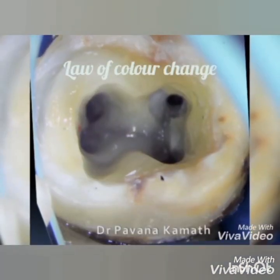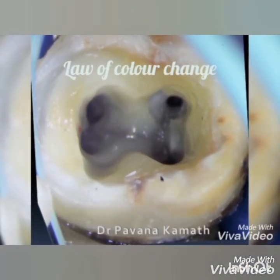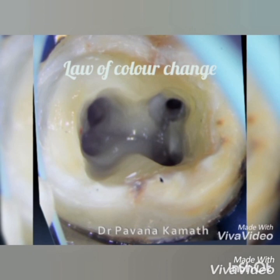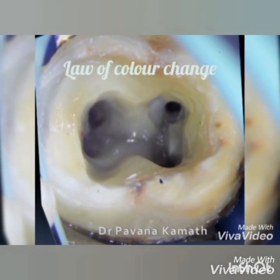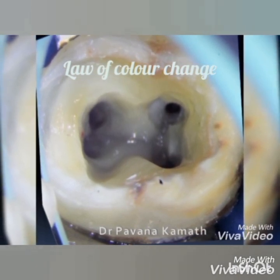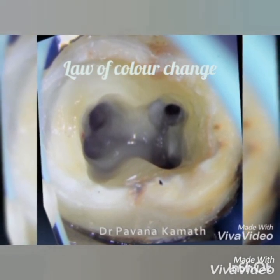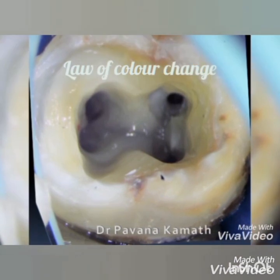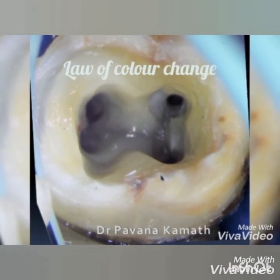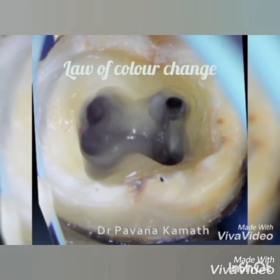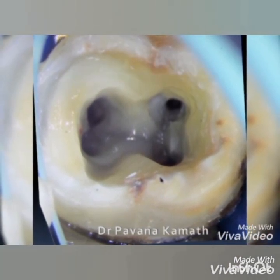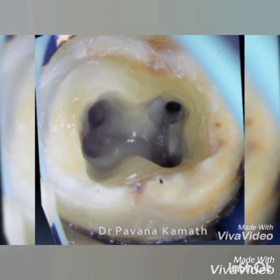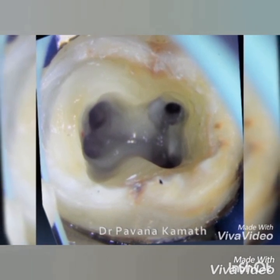The next law is the law of color change. This law says that the color of the pulp chamber floor is always darker than the walls of the pulp chamber, and it is clearly evident in the image that we can see.